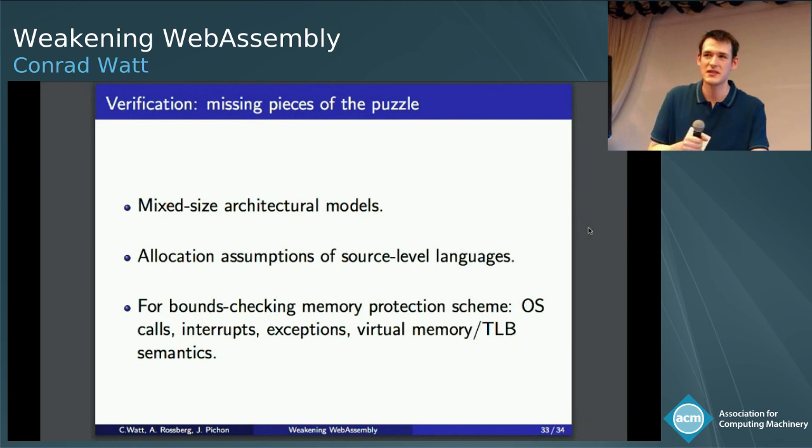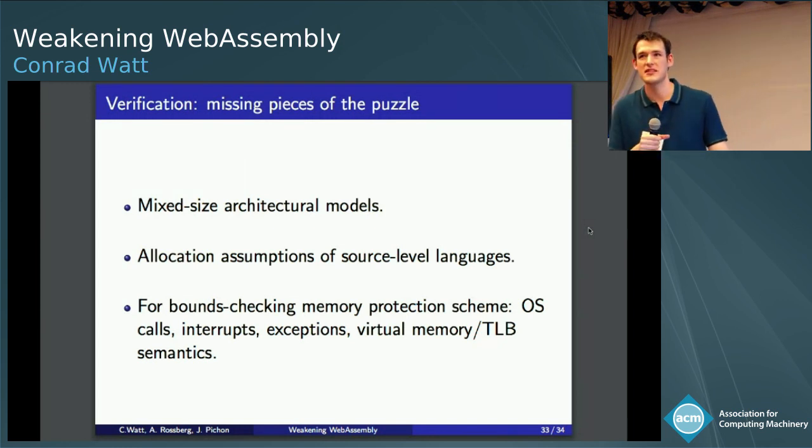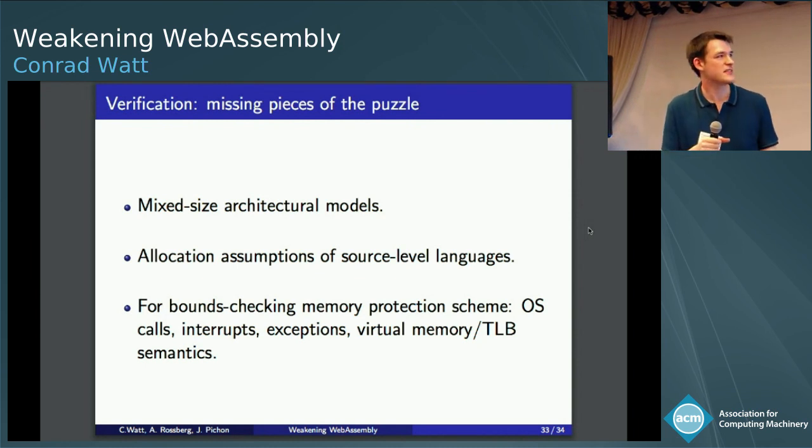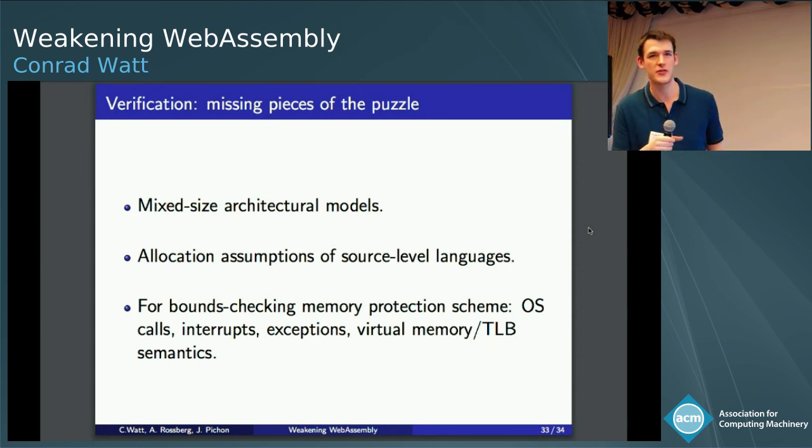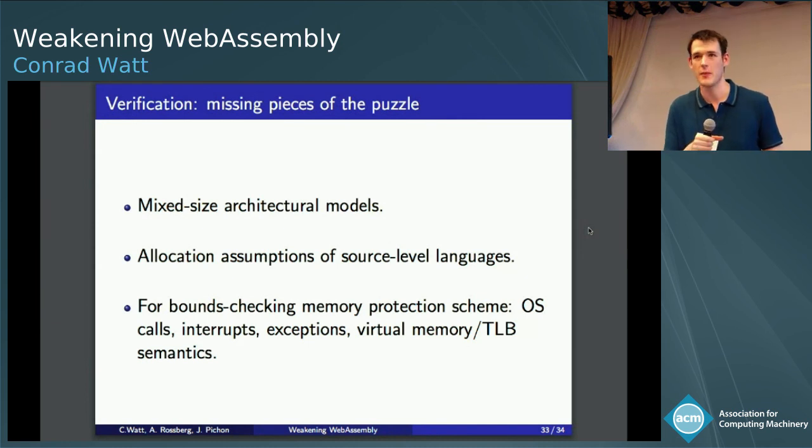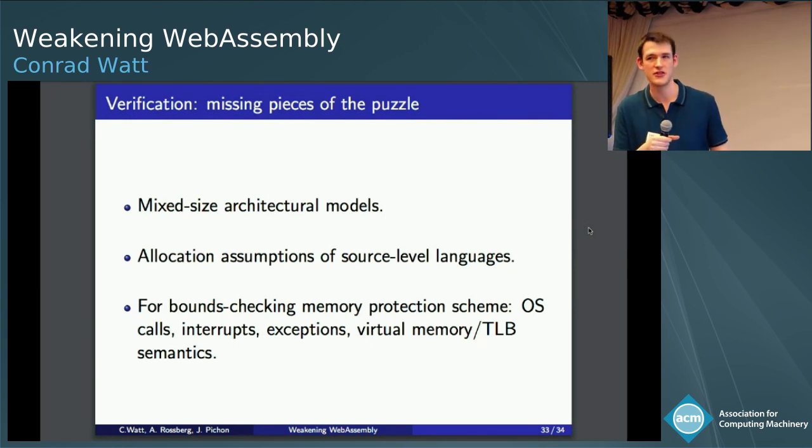So just to conclude, there are some missing pieces to the puzzle of verifying that all implementations are correspondent to our model. One of the most fundamental ones is that, as I said, WebAssembly's model is mixed size. And there aren't that many models of mixed size architectural relaxed behavior. We have an operational one for ARMv8 and Power. We do not have a mixed size model for x86. A lot of WebAssembly is compiled to x86. So that would be quite good to kind of tie up our full formal story. We don't necessarily have a full picture of the assumptions source level languages compiling to WebAssembly make when allocating objects. We're pretty confident that even though our story for memory growth is correct for C and Rust and low level languages like that, if you potentially have another language compiling to WebAssembly that expects allocations to be observable in a more synchronous way in concert with parallelism, we don't necessarily know that we've got that right.